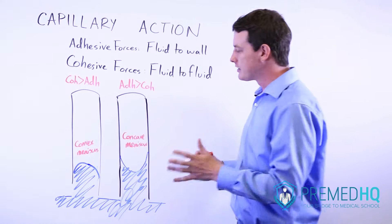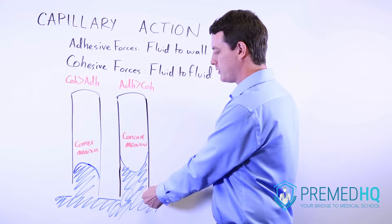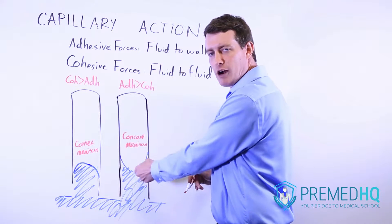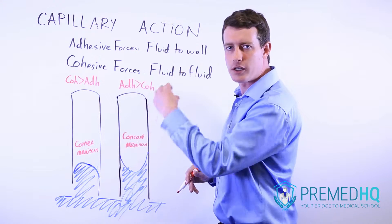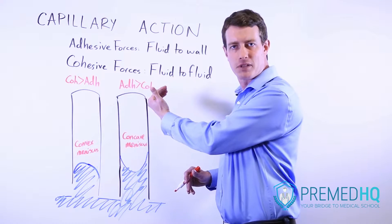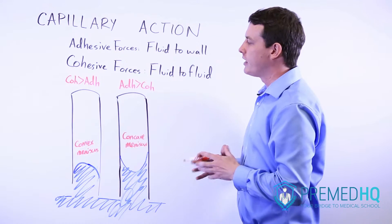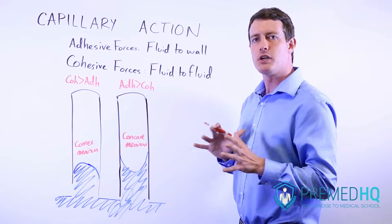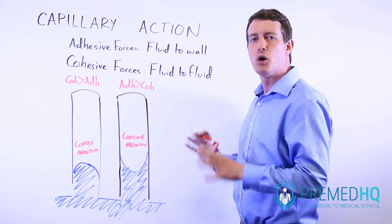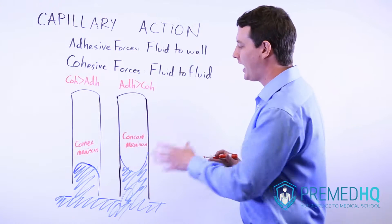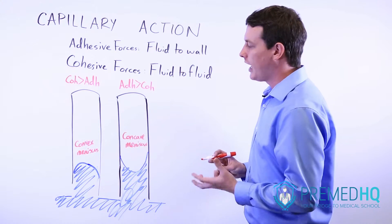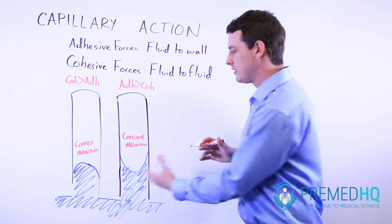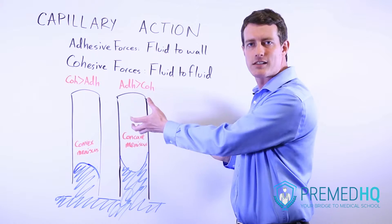The way capillary action works is that initially one of the water molecules gets attracted to the walls of this capillary and rises up as a result of that. When that one molecule rises up, other water molecules are attracted to it and so they will follow it up the capillary as well. Capillary action is all about the balance between adhesive and cohesive forces — you need the adhesive forces to allow it to move up the walls, and you need the cohesive forces for subsequent water molecules to follow those initial water molecules as they move up.